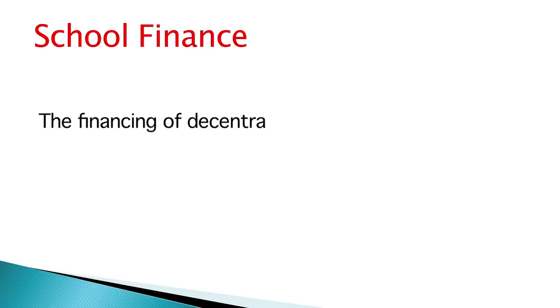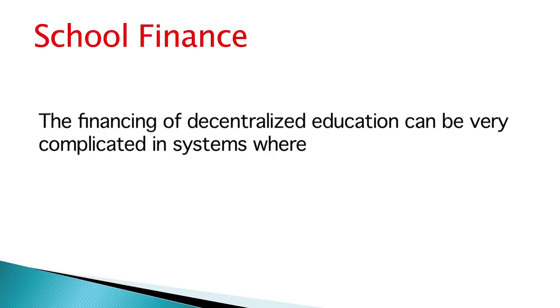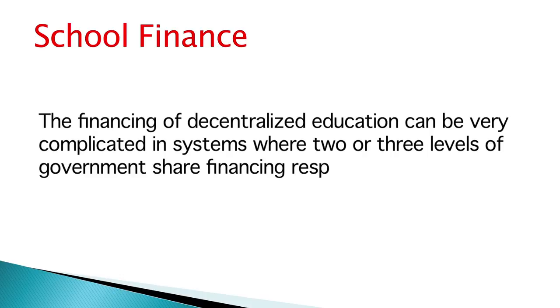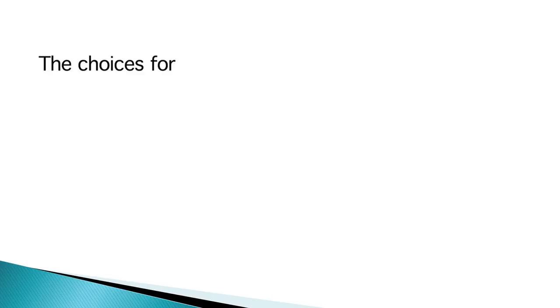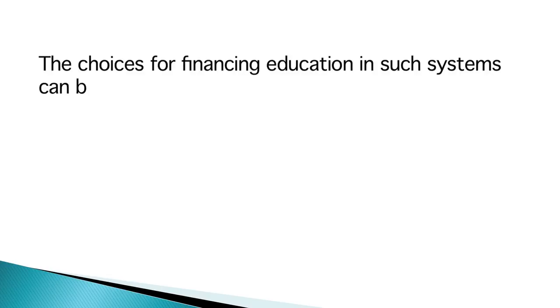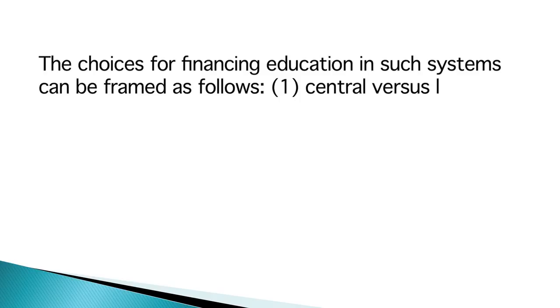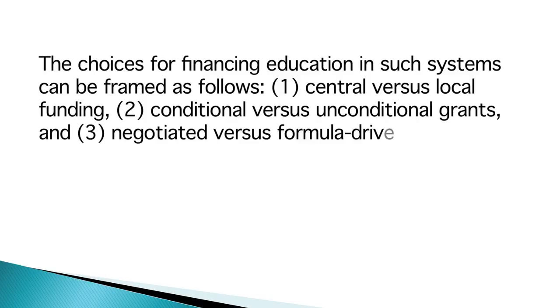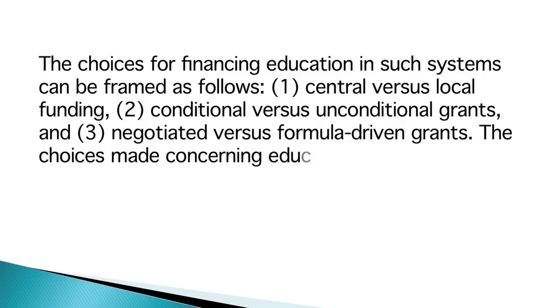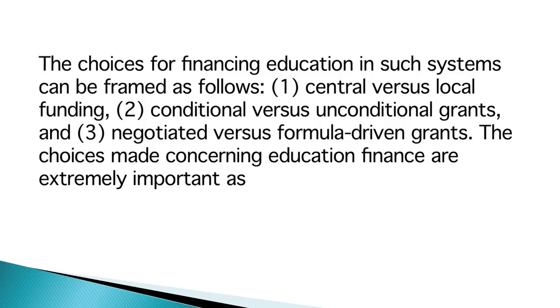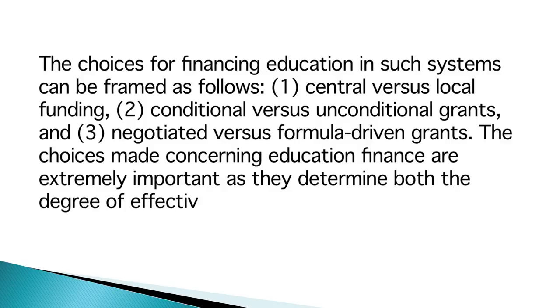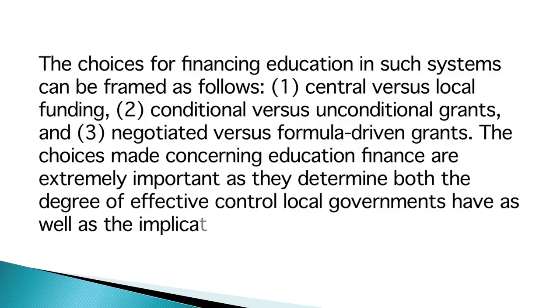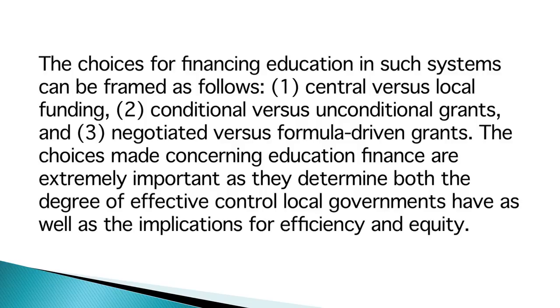Now we would also discuss school finance — how school finance would be affected with the process of decentralization. The financing of decentralized education can be very complicated in systems where two or three levels of government share financing responsibilities. The choices for financing education in such systems can be framed as follows: first, central versus local funding; second, conditional versus unconditional grants; and third, negotiated versus formula-driven grants. The choices made concerning educational finance are extremely important as they determine both the degree of effective control local governments have as well as implications for efficiency and equity.